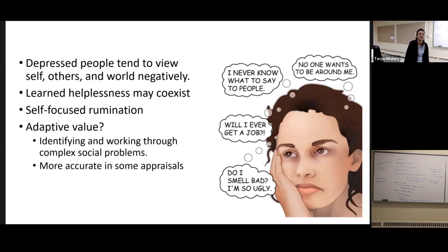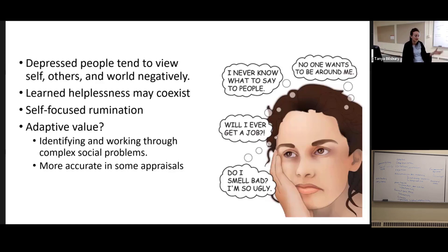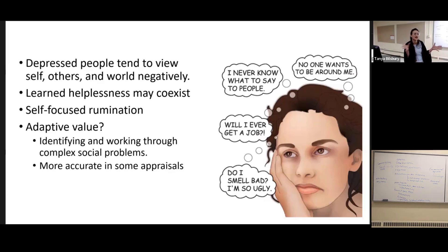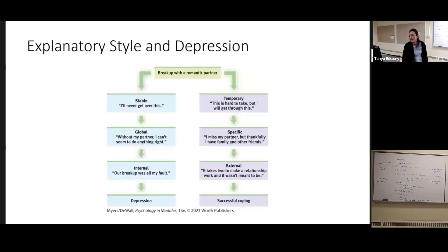Maybe that capacity for critical thinking could be applied appropriately if you could train and develop it somehow. Maybe there's that rumination — it's not very helpful if it's narcissistically self-focused on everything wrong you ever did. But could you apply it in a better way? Could they work to identify and work through complex social problems? Framing matters.